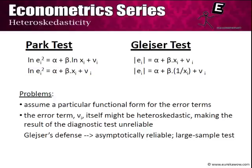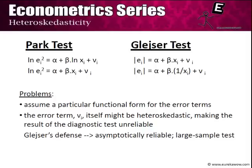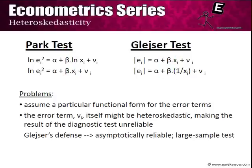In contrast, the Glejser test, instead of taking the square of ei and then its log, takes the absolute value of ei. Two example functional forms are: |ei| = α + β·xi + νi, and |ei| = α + β·(1/xi) + νi—one assuming a linear dependence and the other a reciprocal relationship. We test for heteroscedasticity by assuming that the value of beta in any of these functional forms is equal to zero, meaning the ei squares are independent of xi. Our null hypothesis is that there is no heteroscedasticity—that is, homoscedasticity is satisfied.